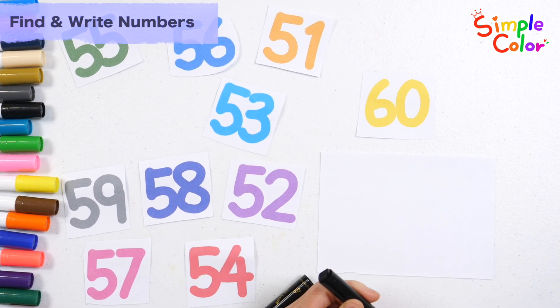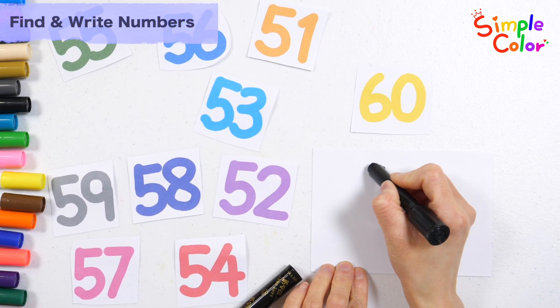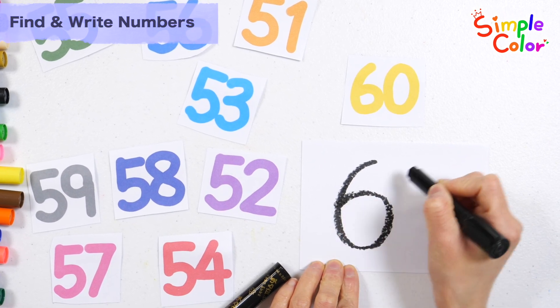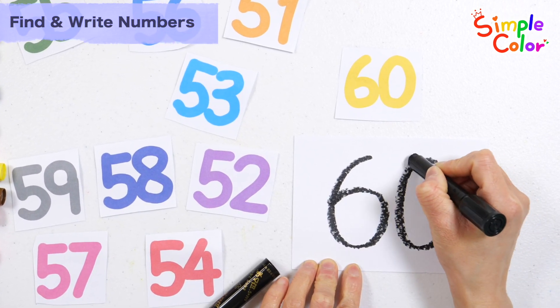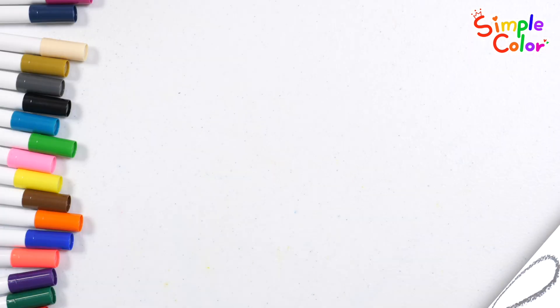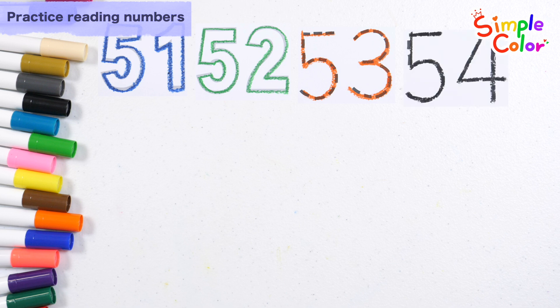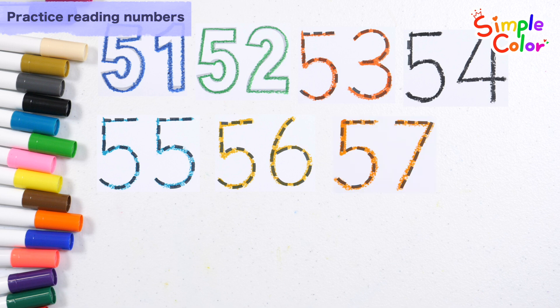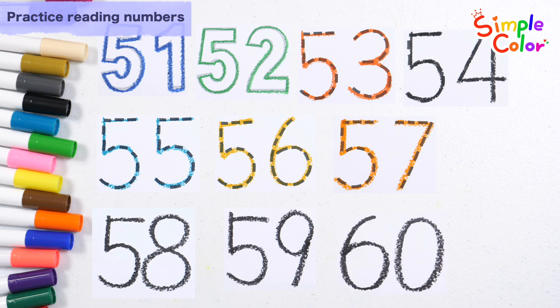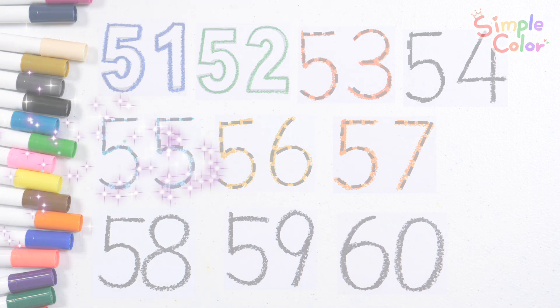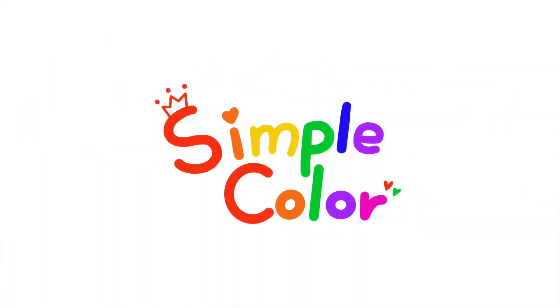Write down the numbers you find with a black crayon. Fifty, fifty-four, fifty-five, fifty-six, fifty-seven, fifty-eight, fifty-nine, sixty. Great job!